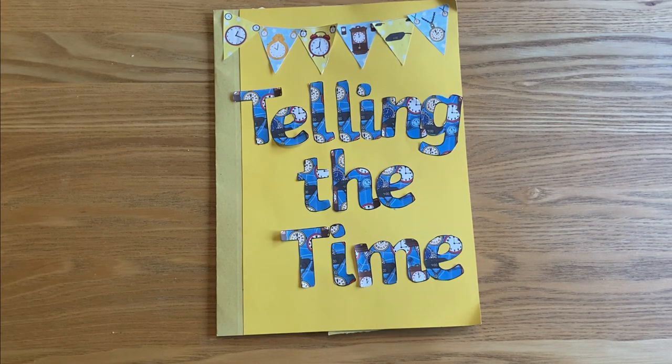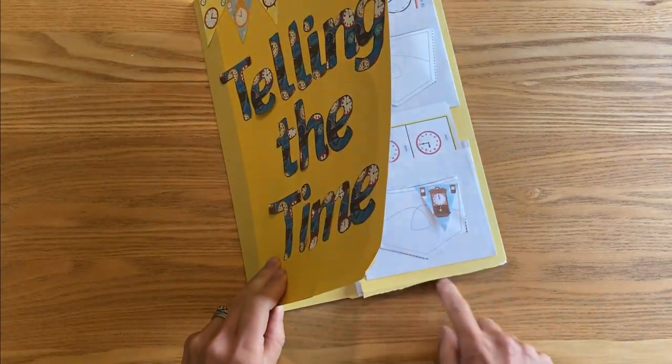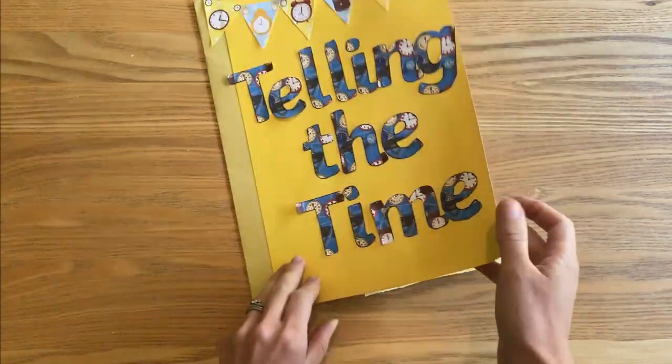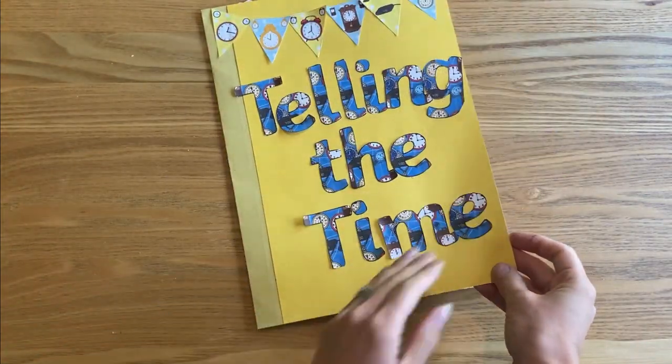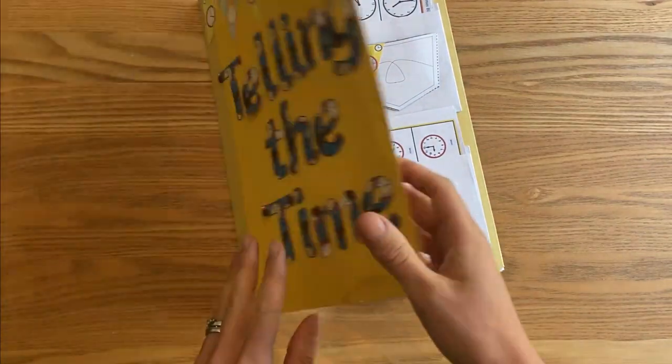Welcome to our Telling the Time lap book look through. To make this lap book we've used an A4 document wallet which we've cut the corners off so the flaps can open, and then I've also added an extra piece of card on the front to make it slightly wider so I can put some more resources in.